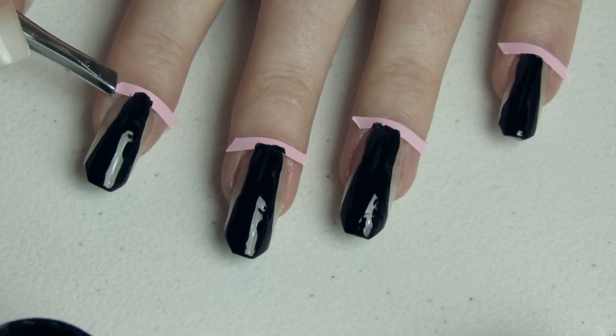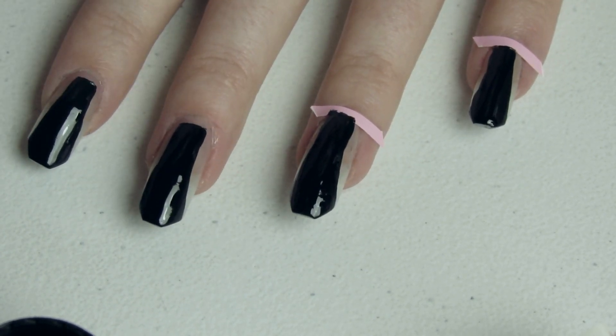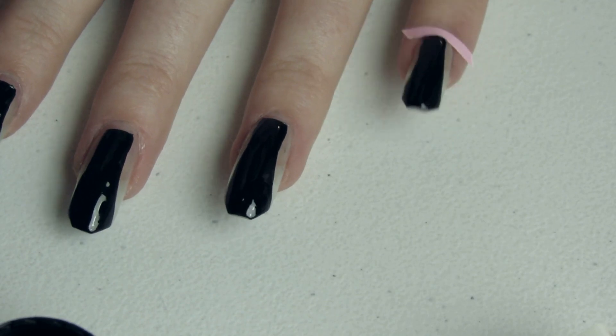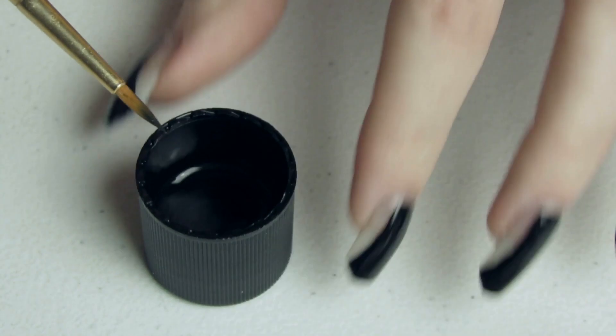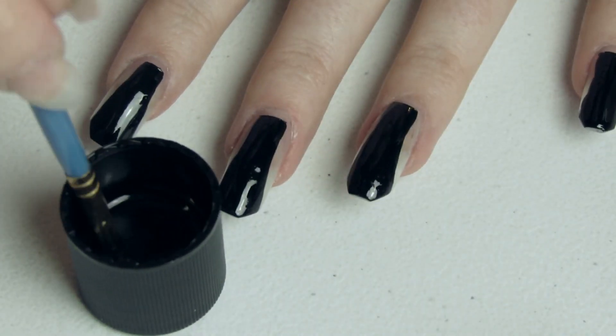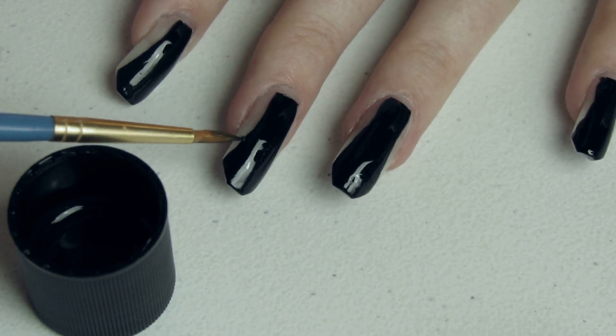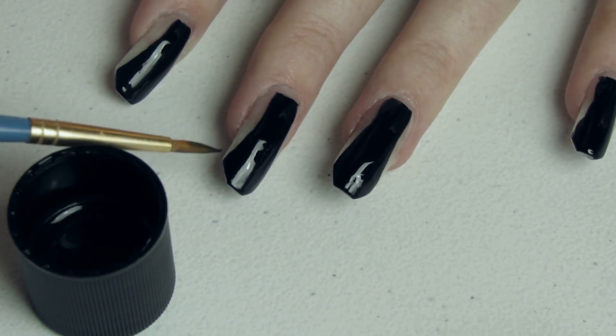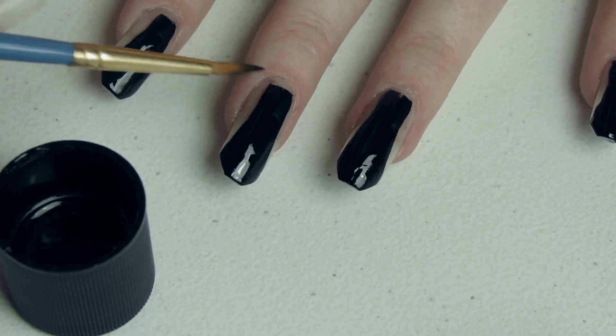Then once they are dry, just peel off the little pieces of tape and you have adorable little coffins. But as you can see, they aren't perfect. So I'm taking some nail polish remover and a tiny paint brush. I put a little bit of remover into the cap and I'm just using the paint brush to perfect the little lines.